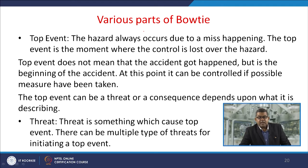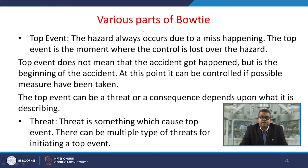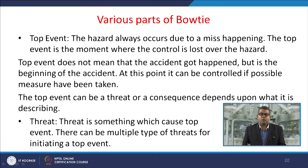The top event is the moment where control is lost over a particular hazard. The hazard always occurs due to a mishappening. The top event does not mean an accident has occurred but is the beginning of the accident. At this point it can be controlled if possible measures have been taken, sometimes referred to as a near miss. The top event can be a threat or a consequence depending on what is being described.